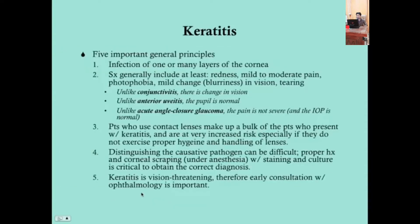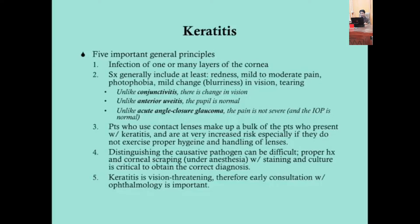Five general principles before discussing the different forms of keratitis. Number one: keratitis is an infection of one or many layers of the cornea. Interstitial keratitis only infects the stroma, but all other forms typically start on the outside and ulcerate inward, causing an ulcer that can be visualized with a specific test.